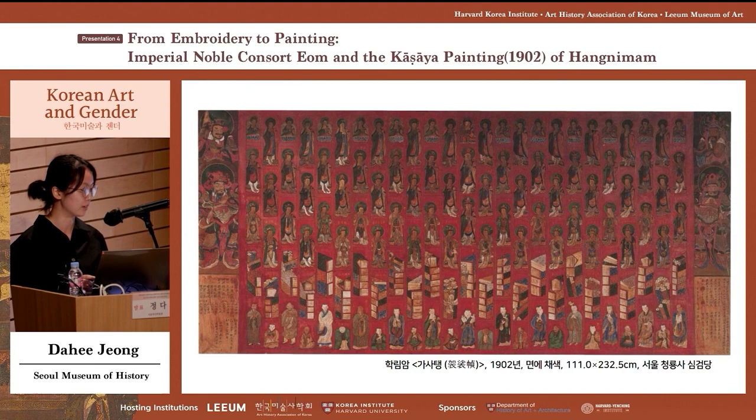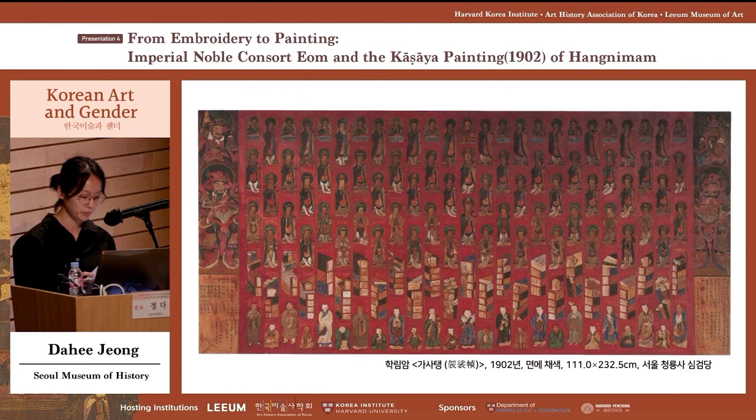Such research is referenced when looking into the commission of Ga Sa Taengs where the female commissioner and the medium of embroidery are key factors. We will look at how Ga Sa Ya, an expensive offering of a female devotee, was replaced with a painting of Ga Sa Ya, and how Lady Eum commissioned Ga Sa Taeng in 1902 to visualize her status and femininity.